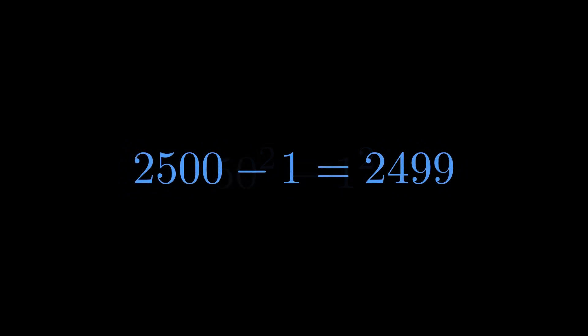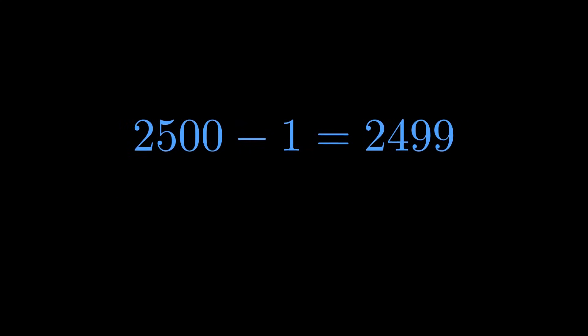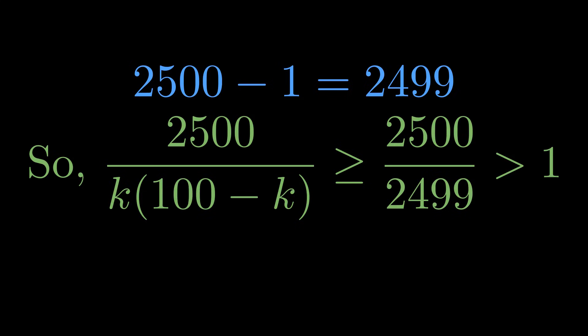Which is 2500 minus 1, which is 2499. And this is fantastic! The largest the denominator can ever be is 2499, which is less than 2500. So every single symmetric pair, for any value of k in our range, has a product strictly greater than 1.